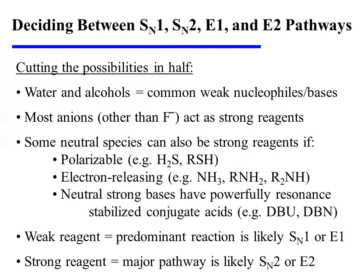Water and alcohols are common weak nucleophiles and bases. Most anions other than fluoride will act as strong reagents. However, some neutral species can also be strong reagents — if, for instance, they are polarizable, such as sulfur-containing species, or if they are electron-releasing, such as nitrogen-containing species like ammonia or amines.